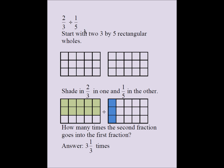This is the last example: 2 thirds divided by 1 fifth. I start with a 3 by 5 rectangle for my whole. I shade in 2 thirds — 1 third, 2 thirds — and then shade in 1 fifth in blue. I'm asking how many times 1 fifth goes into 2 thirds, meaning how many blue patches do I need to cover the green patch? I need 1, 2, 3 whole blue patches, plus 1 third of another blue patch. So the answer is 3 and 1 third.